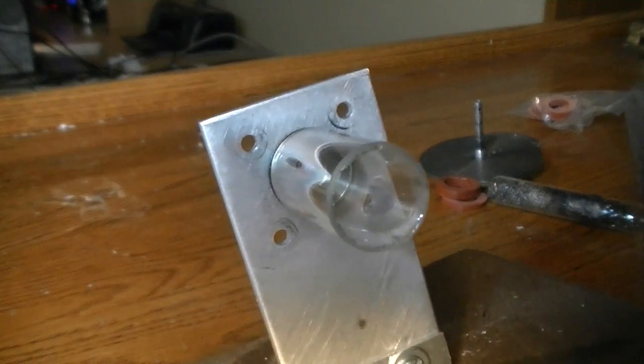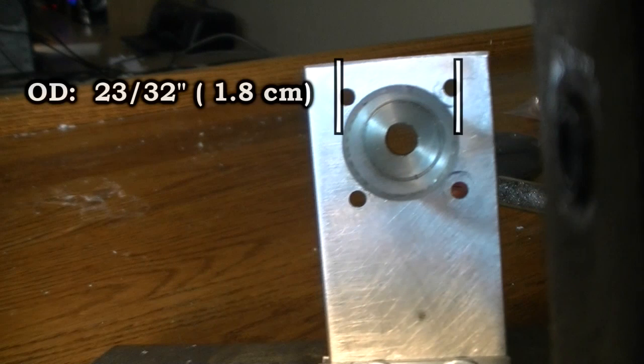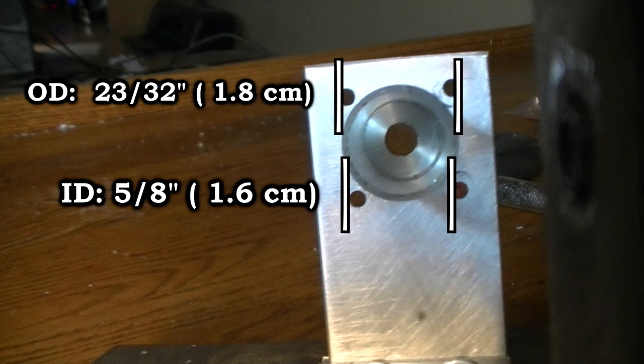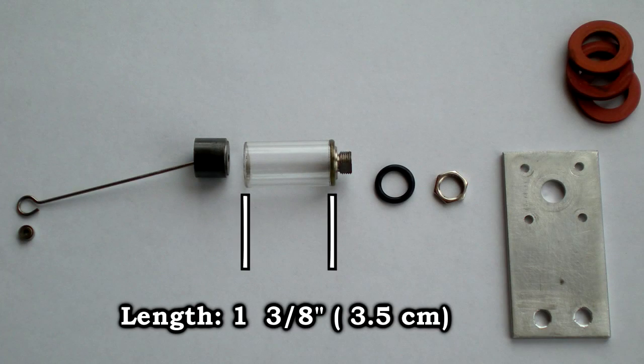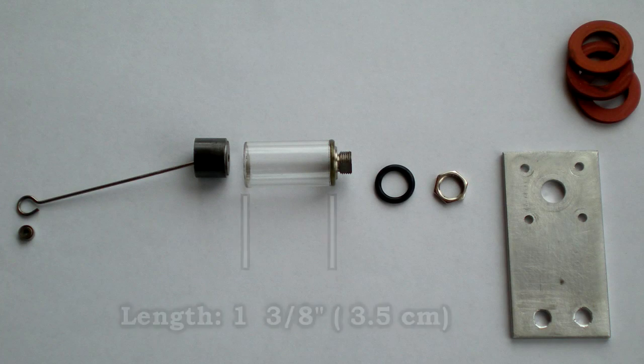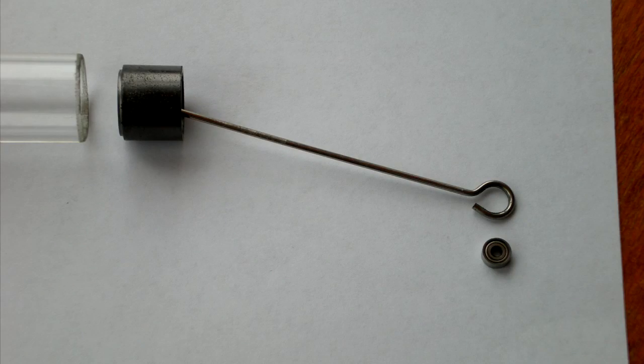The Pyrex portion of this actuator has an outer diameter of 23 32nds and an inner diameter of 5 eighths. I cut the Pyrex cylinder's length to 1 and 3 eighths of an inch. This allows the connecting rod to rotate at greater angles.